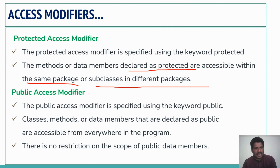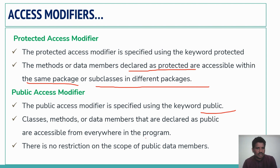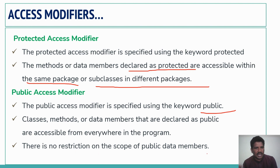When it comes to public Access Modifiers, we use the keyword public. Members declared as public are accessible from anywhere in the program — within the class, from outside a class, within a package, and also from outside the package. There are no restrictions on the scope of public data members.